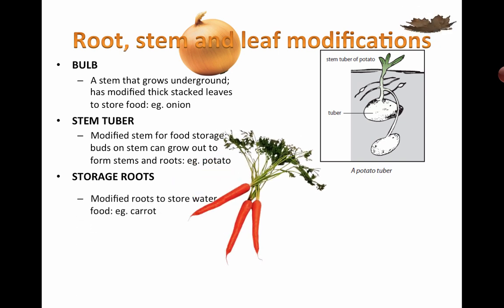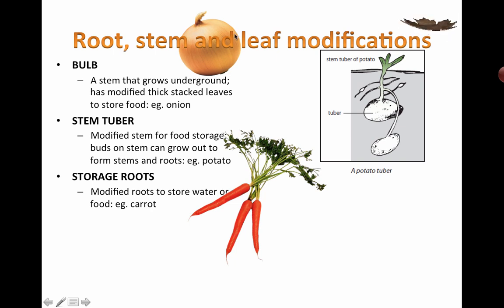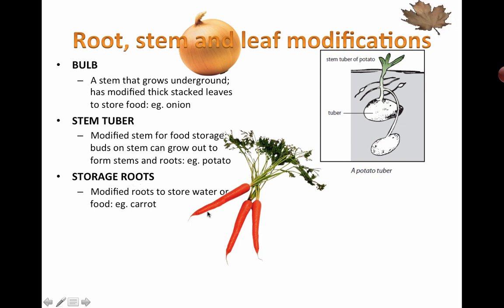Storage roots — a carrot is an example of a modified root. You should be able to tell the difference: are we talking about special stems being modified, like in the onion and the potato? Or are we talking about roots being modified, which is the case for a carrot?